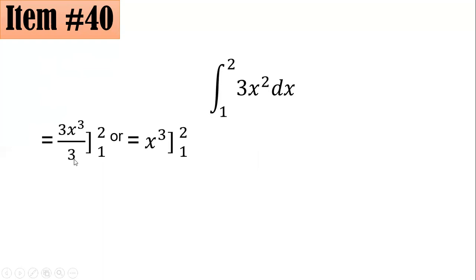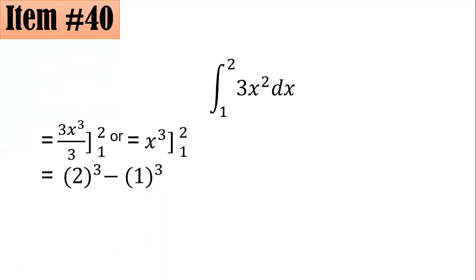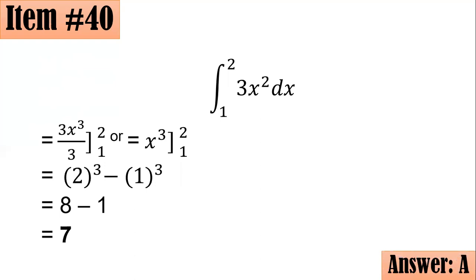The 3 in the numerator and denominator cancel, leaving x cubed evaluated from 1 to 2. By the fundamental theorem of calculus, we substitute the upper limit then subtract the lower limit: 2 cubed minus 1 cubed equals 8 minus 1, which equals 7. If you answered a, great job!